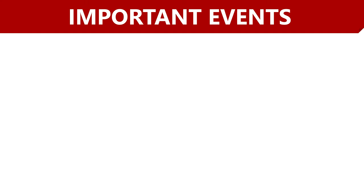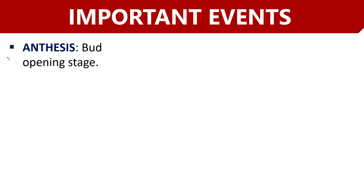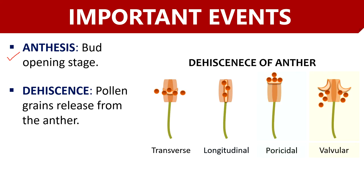Let us now discuss some of the important events associated with the anther. The first is anthesis — the stage during which the bud converts into a mature flower by exposing its male anther and female stigma. Then dehiscence is the stage during which pollen grains are released out of the pollen sac via the stomium, and it generally occurs once the cells of the anther become dry or fibrous.